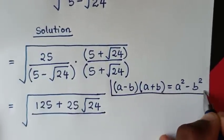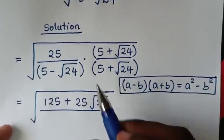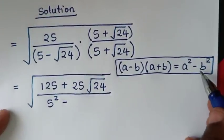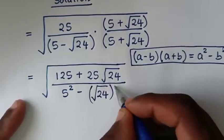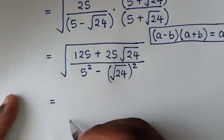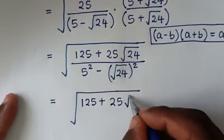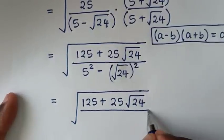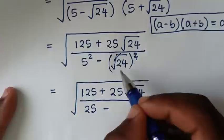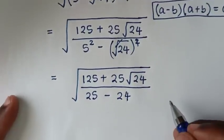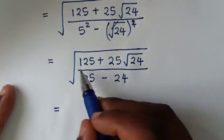Which is equal to a squared minus b squared. So, from this form here, we'll apply this. So, a squared will be 5 squared — it is 5 squared — then minus b squared, it will be square root of 24 squared. Then, in the next step, it will be equal to square root of 125 plus 25 square root of 24, over 5 squared which is 25, then minus — the square root cancels with the square — so it will be minus 24. Then, it will be equal to: the denominator 25 minus 24 is 1. So, this numerator divided by 1 is just the numerator. So, it will be square root of 125 plus 25 square root of 24.